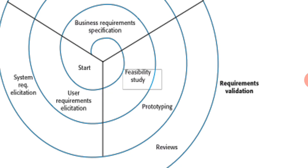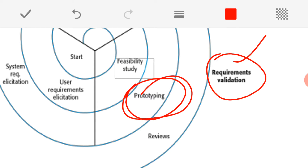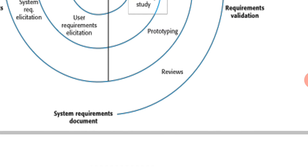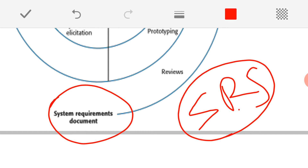Once the requirements have been specified, we go for checking those requirements — whether they have been properly defined and whether they are correct. We perform different types of checks during requirement validation. While doing this, we take the help of prototyping. Prototyping means creating a model of the software to be developed — not a real-time implementation, just a model that helps us better understand the software's functionalities and services, helping us define requirements more effectively. This is followed by a review of the requirements.